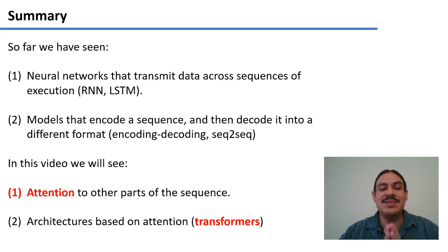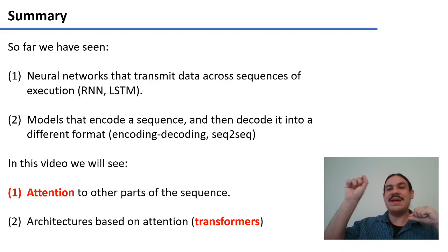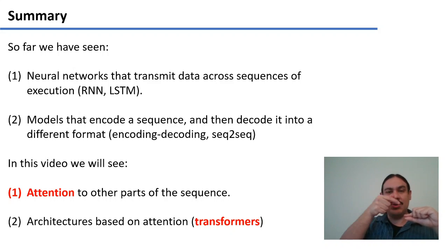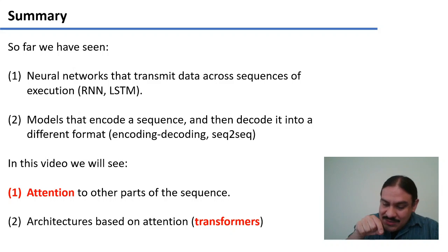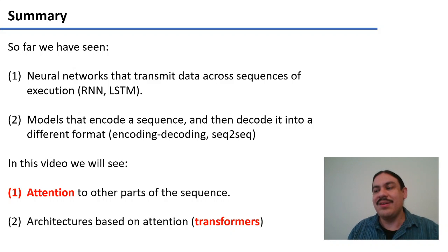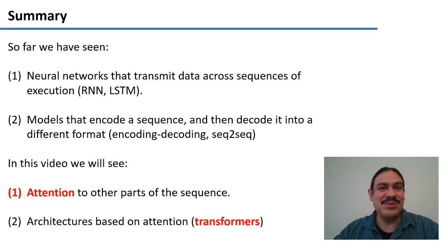In this video, we'll look at the concept of attention. When you're producing the decoded output, maybe you want to look at more elements other than just your intermediate representation. We're going to have attention across encoder-decoder. We're also going to have self-attention, which is looking at my own sequence when I'm encoding, and we're going to look at a couple of architectures that use this. They're called transformers, and in your exercises, you're going to get to play with a few transformers.